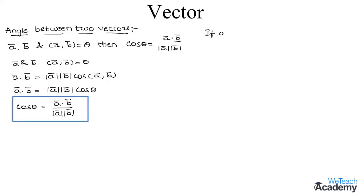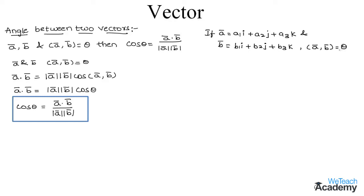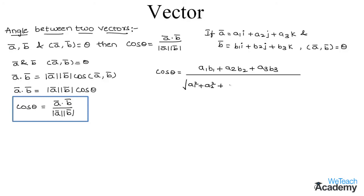If a bar equals a1·i + a2·j + a3·k and b bar equals b1·i + b2·j + b3·k, and the angle between vectors a bar and b bar is theta, then cos theta is given by (a1·b1 + a2·b2 + a3·b3) divided by the square root of (a1² + a2² + a3²) into the square root of (b1² + b2² + b3²).